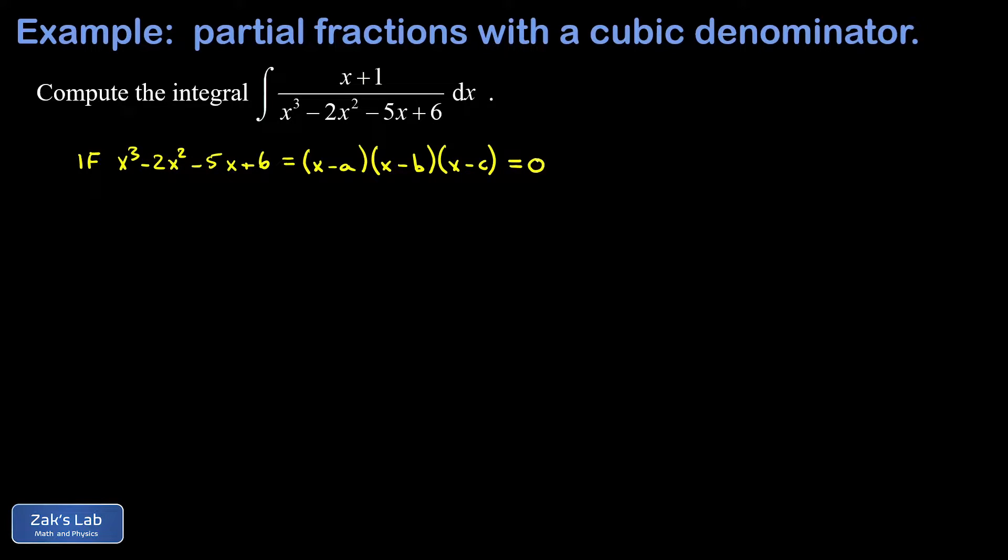We can tell by inspection because it's factored that our roots occur at x equals a, x equals b, and x equals c. Because each of those values makes one of the factors equal to zero, and zero times anything is zero. So those are our roots.